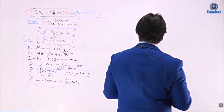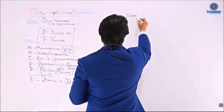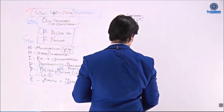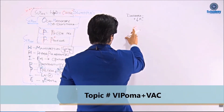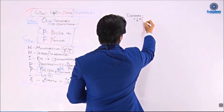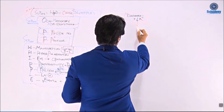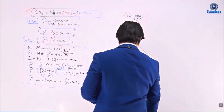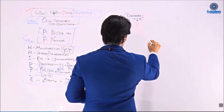Let me make a memory box. If you write 'diarrhea' with 'hypokalemia' — K for potassium — you get the letter V shape. This V stands for two diseases: VIPoma and villous adenoma. So diarrhea with hypokalemia is represented by V, which stands for both VIPoma and villous adenoma.